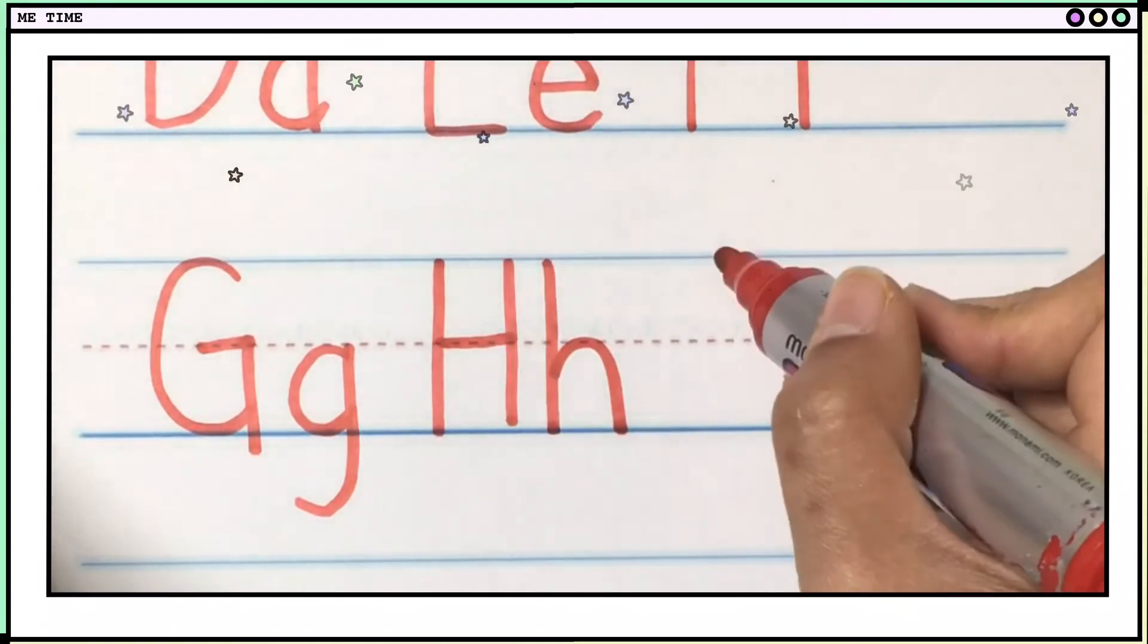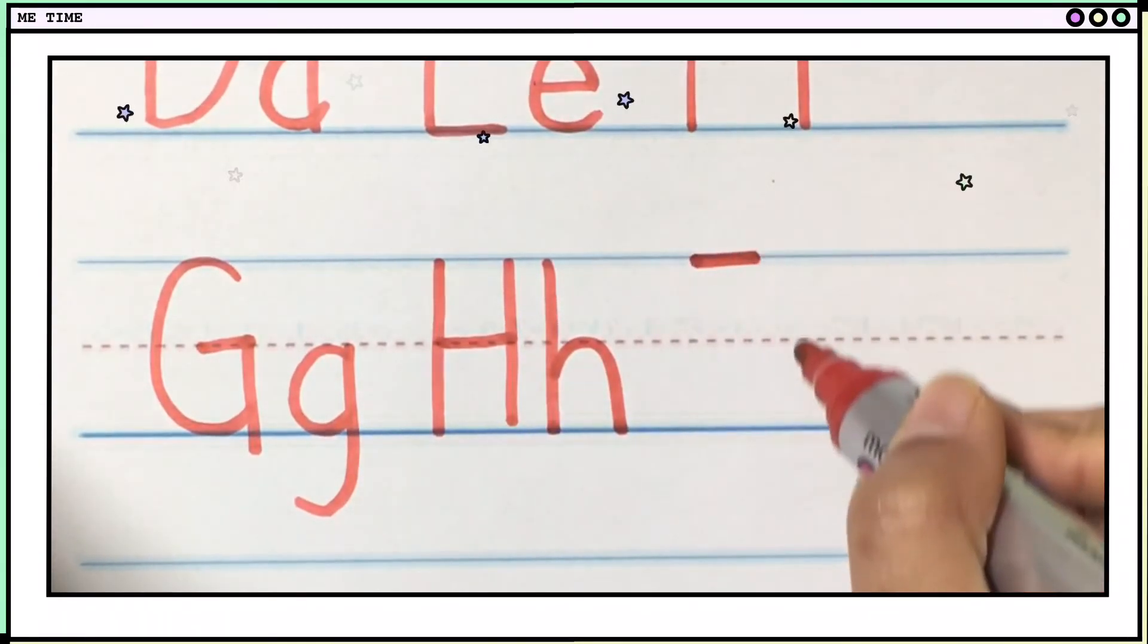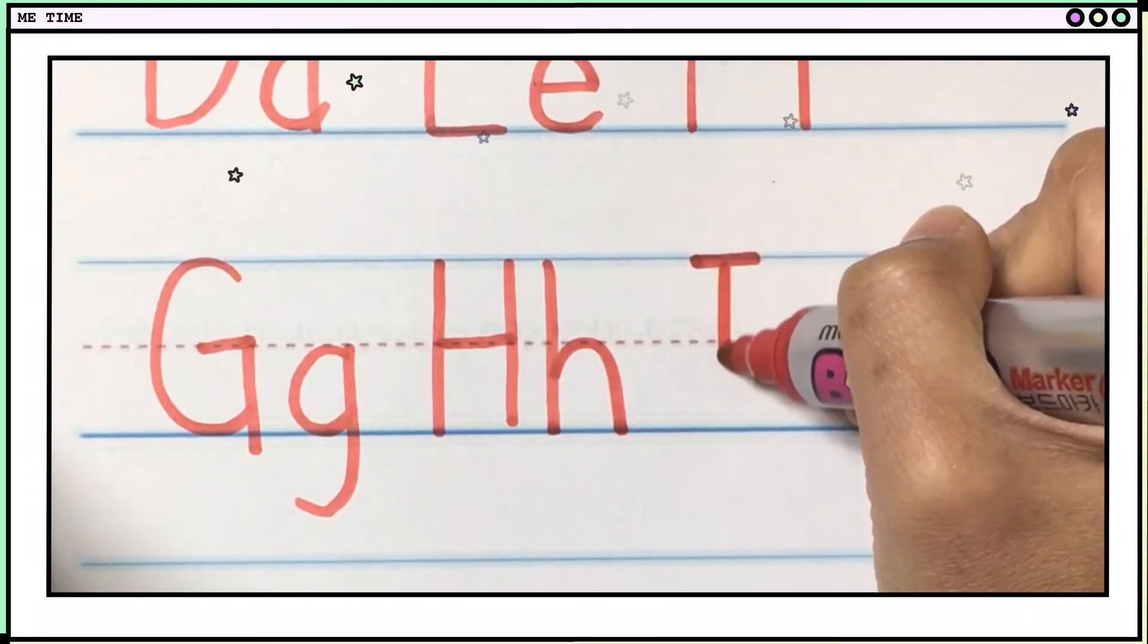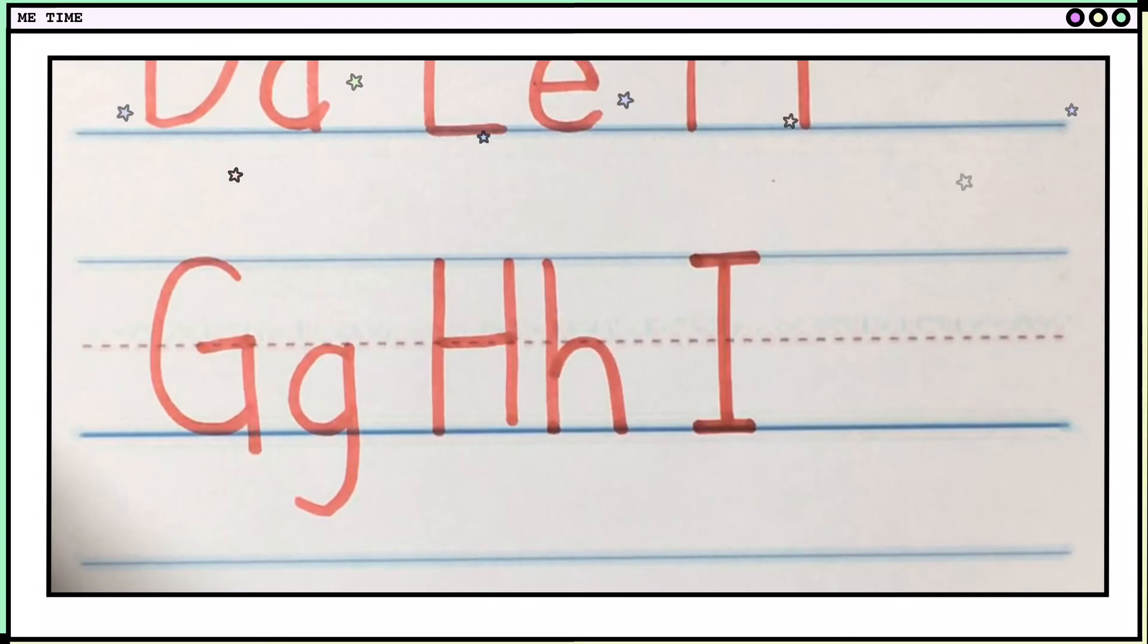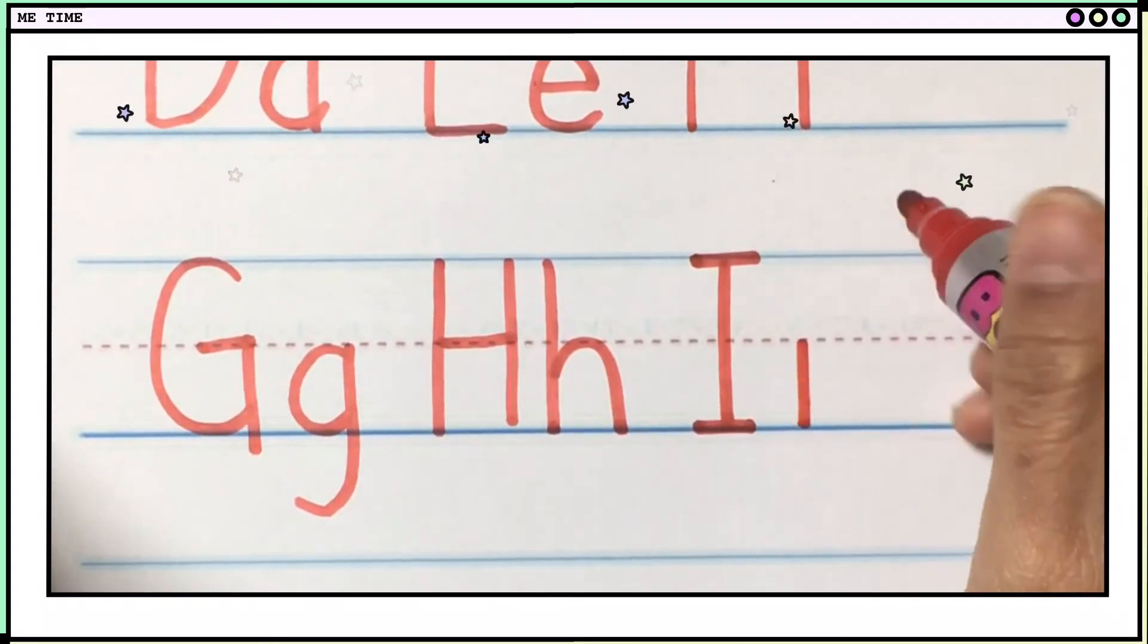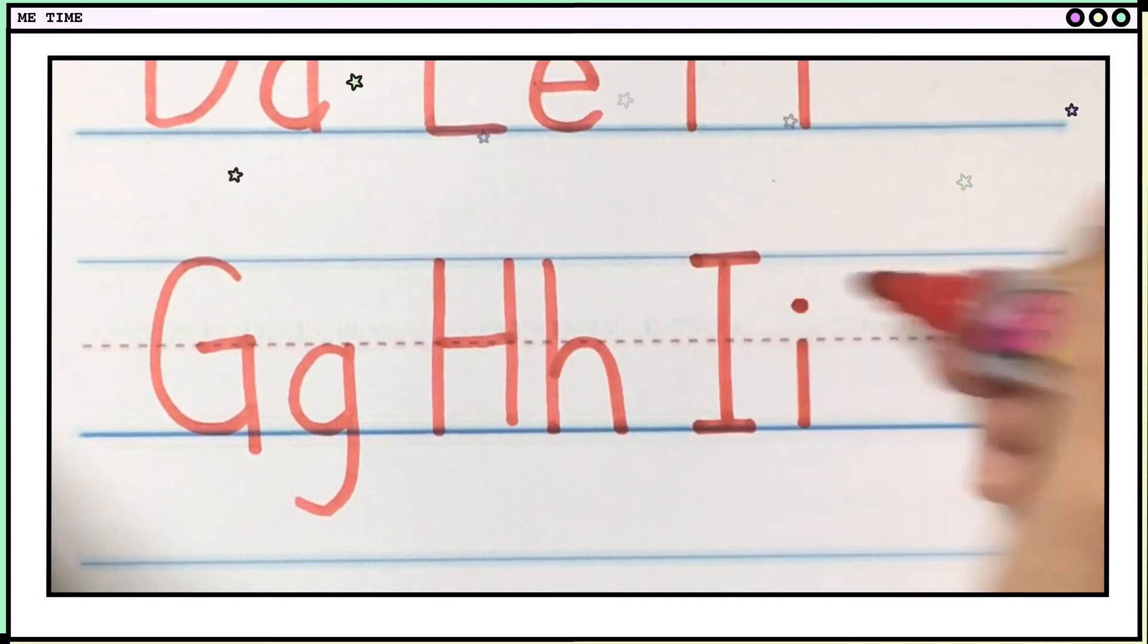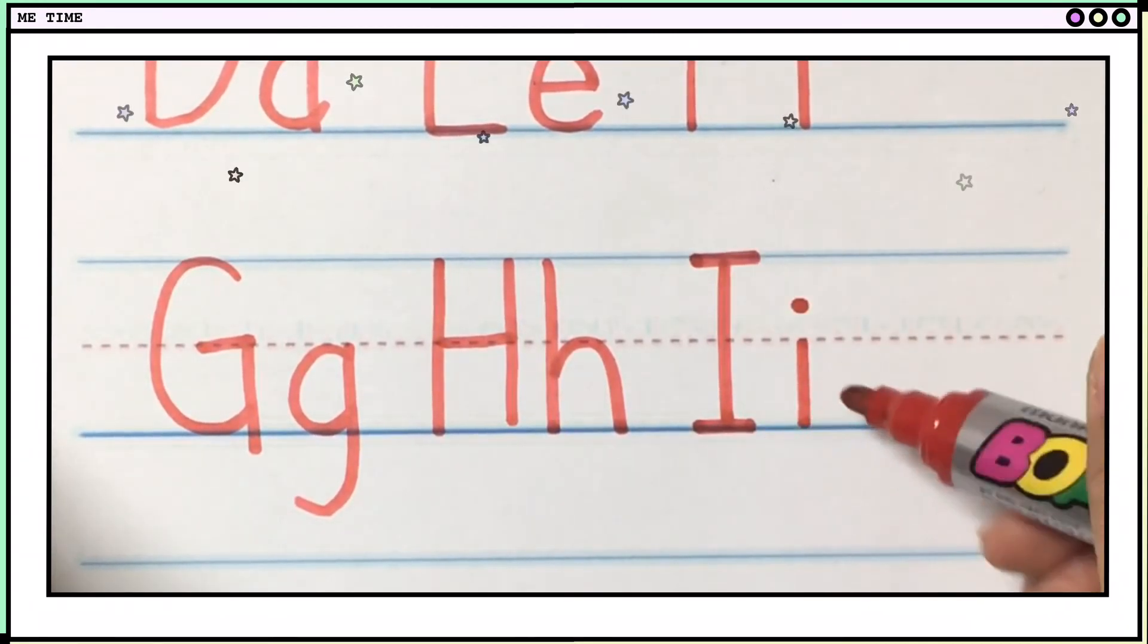Next is I. I is, you start here. One, and then make a straight line. And then, also right here, another line. Okay, and small I is one short line, and make a dot. Jump here. Big I, small I.